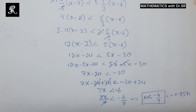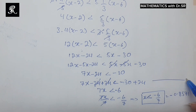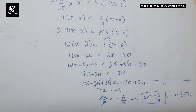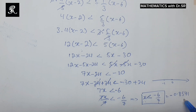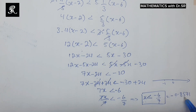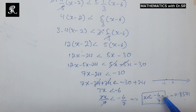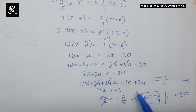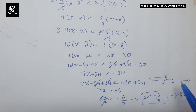Negative 6 over 7 is approximately equal to negative 0.8571 and so on — four decimal places is sufficient. To represent this on the number line, we have 0 and negative 1 marked, and negative 0.857 is the upper bound, located slightly to the right of negative 1. The solution extends from negative infinity up to this point. We use an open circle because the inequality is strictly less than.